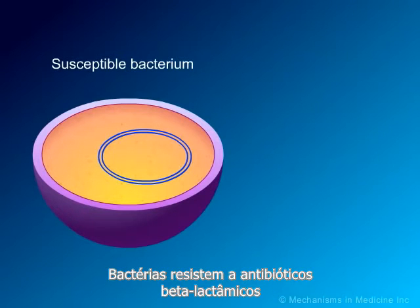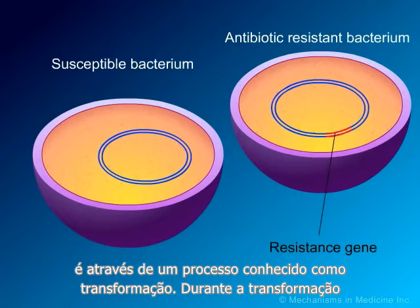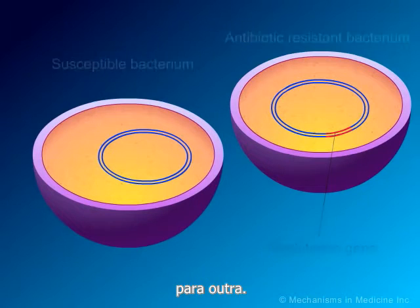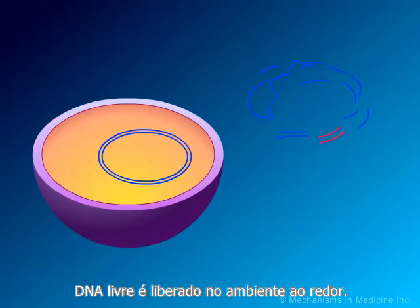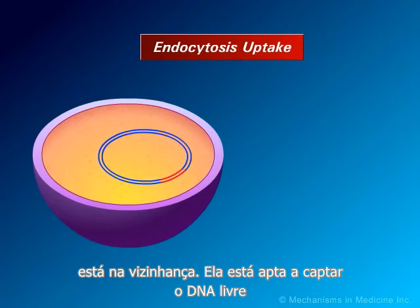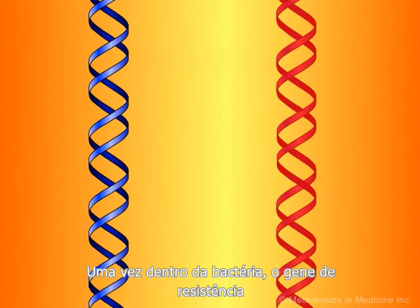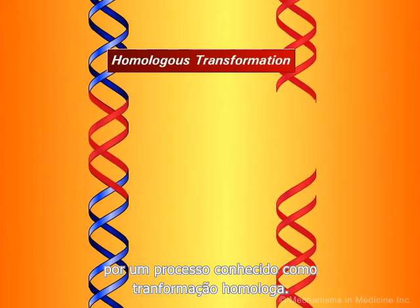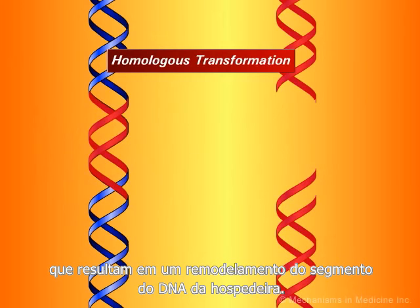Bacterial resistance to beta-lactam antibiotics may be acquired by several routes. One of the most important mechanisms is through a process known as transformation. During transformation, chromosomal genes are transferred from one bacterium to another. When a bacterium containing a resistance gene dies, naked DNA is released into the surrounding environment. If a bacterium of sufficient similarity to the dead one is in the vicinity, it will be able to uptake the naked DNA containing the resistance gene. Once inside the bacterium, the resistance gene may be transferred from the naked DNA to the chromosome of the host bacteria by a process known as homologous transformation. Over time, the bacterium may acquire enough of these resistance genes to result in a remodeling of the segment of the host DNA.